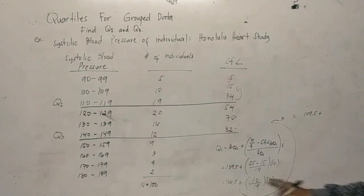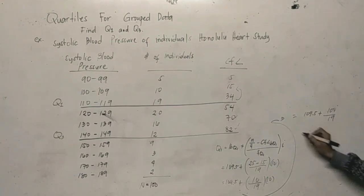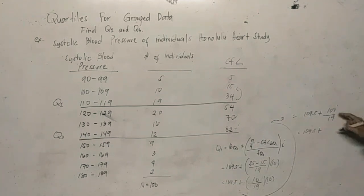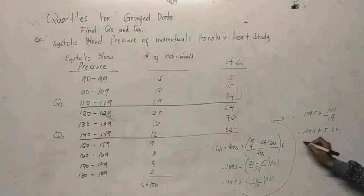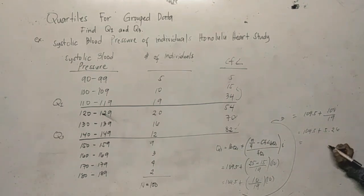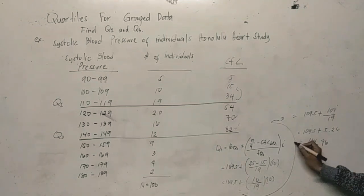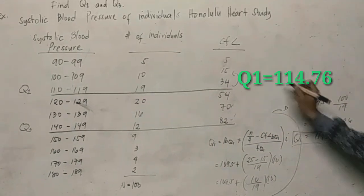So we compute: 10 times 10 equals 100, divided by 19. That gives us approximately 5.26. Therefore Q1 equals 109.5 plus 5.26, which is approximately 114.76. So our Q1 is 114.76.